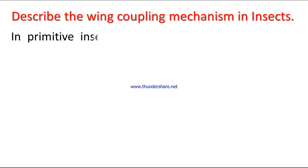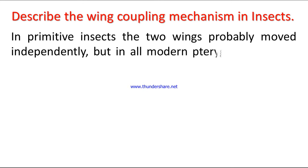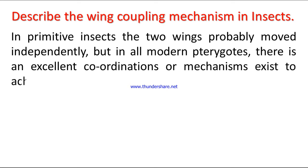In primitive insects, the two wings probably moved independently. But in all modern pterygotes, there is an excellent coordination or mechanism that exists to achieve this condition.